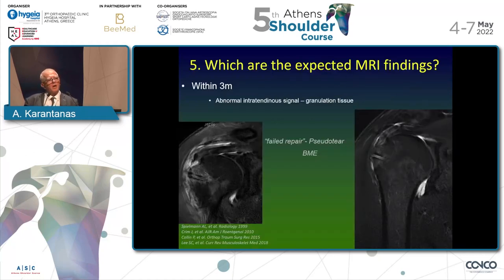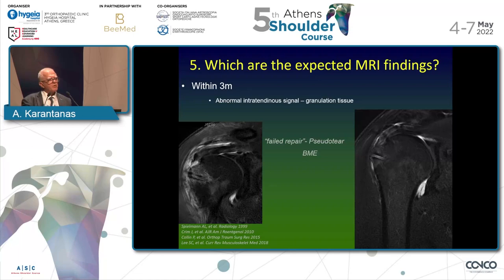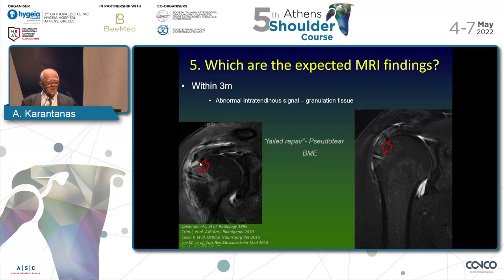The most powerful tool is magnetic resonance imaging. We have two groups: one up to three months postoperatively, and the next between three and six months. In the early group, you see there is an abnormal signal within the tendon — it looks like a tear. However, this is not a tear; it's granulation tissue. A few months later we have restoration of the tendon appearance. Therefore this is not a failed repair — it is a pseudo tear.